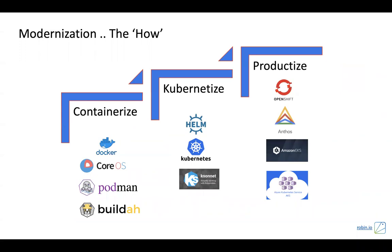Coming to the how part of modernization, there are multiple stages. If you take a traditional application, the first thing you have to do is containerize it. There are several tools: Docker, Rocket, Podman, and Buildah from Red Hat. Once you containerize, the second step is Kubernetes — assuming Kubernetes is the default standard. When you want to Kubernetes-ify these applications, it means teaching multiple Docker containers to deliver a service. The most prominent tools in this area are Helm charts, Ksonnet, and the current trend: operators.